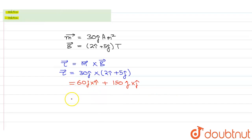So this will become what? This will become 60 minus k cap plus 150 into 0. So our answer will become minus 60 k cap.